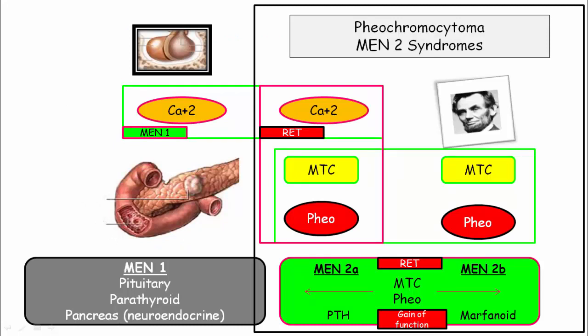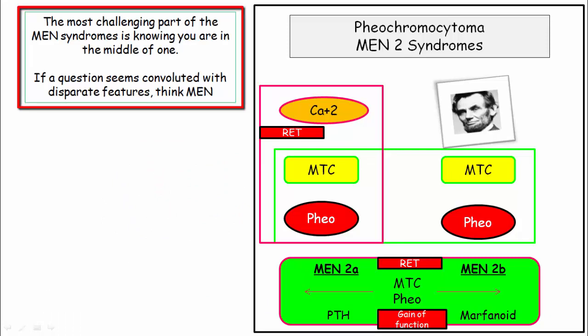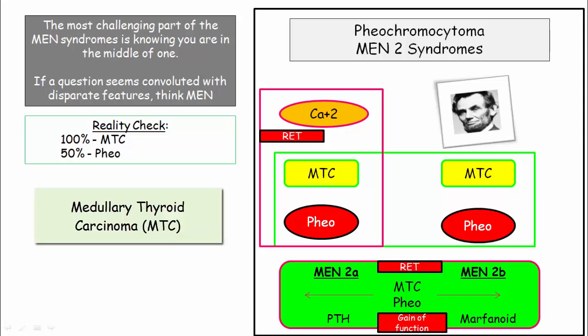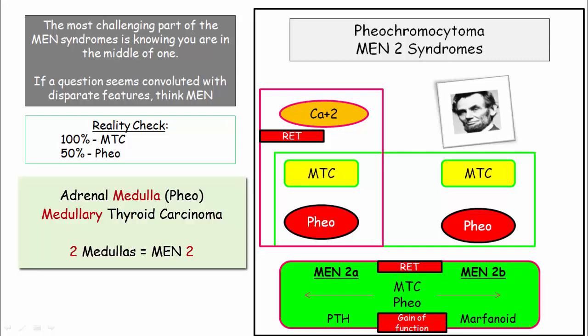We will focus only on MEN2, as that is the syndrome associated with pheo. The most challenging part of the MEN syndromes is knowing you're in the middle of one — if a question seems convoluted with disparate features, think MEN. MEN2 has a definite pattern: 100% of patients will have medullary thyroid carcinoma, abbreviated MTC, which usually predates other components of the syndrome. Note the symmetry: adrenal medulla and medullary carcinoma — two medullary syndromes — therefore MEN2.